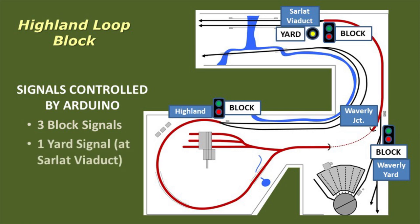But now we only need one additional signal at Sarlott Viaduct, telling an operator waiting to enter the yard if they have permission to proceed. The Arduino enables us to control the block using only four signals.